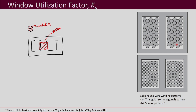So there are different factors contributing to unutilized window space: wire insulation, fill factor due to round wires, the bobbin, and edge factors at the corners. Because of these factors, some of the window is not utilized. This factor is called the window utilization factor — it describes how much of the window area we will actually be able to utilize for making the magnetics.